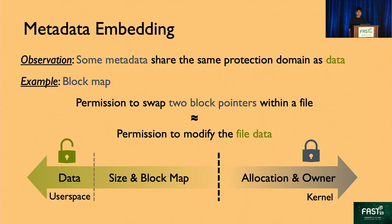What do we mean by sharing the same protection domain? Let's take block map as an example. If a user has permission to swap two block pointers within a file, then it can cause other users to read incorrect data. However, the same can be achieved if the user already has permission to modify the data — the user can just directly overwrite the two blocks with the swapped content. Therefore, we say that the block map is in the same protection domain as the data.